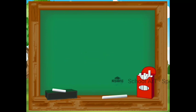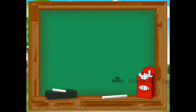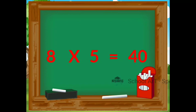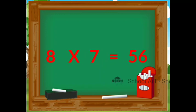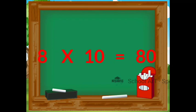8 twos are 16, 8 threes are 24, 8 fours are 32, 8 fives are 40, 8 sixes are 48, 8 sevens are 56, 8 eights are 64, 8 nines are 72, 8 tens are 80.